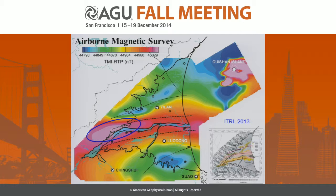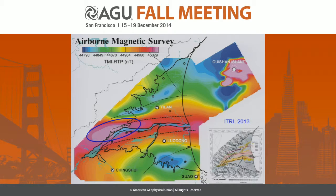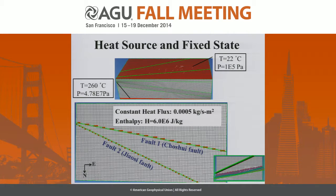We also have geophysical data from an airborne magnetic survey. There is a magnetic anomaly in this region, which might indicate a heat source deep in the northwest, rising from the southeast. We will use this as a reference to build the boundary conditions.